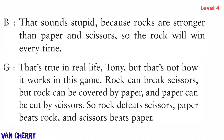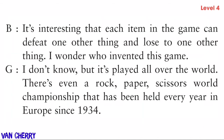That sounds stupid — rocks are stronger than paper and scissors, so rock will win every time! That's true in real life, but not how it works in this game. Rock can break scissors, but rock can be covered by paper, and paper can be cut by scissors. So rock defeats scissors, paper beats rock, and scissors beats paper. It's interesting that each item can defeat one other thing and lose to one other thing.